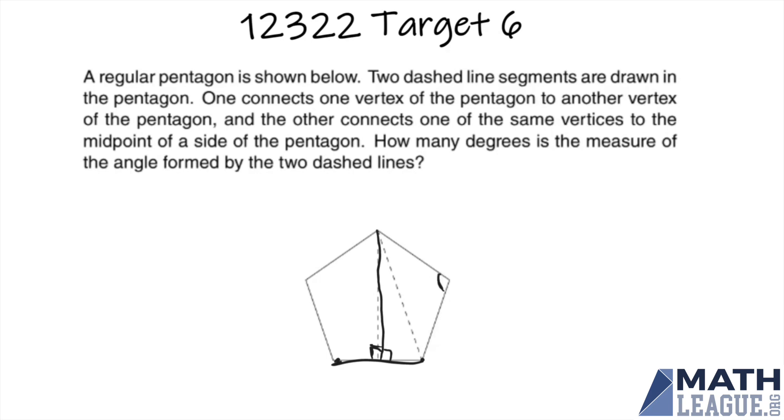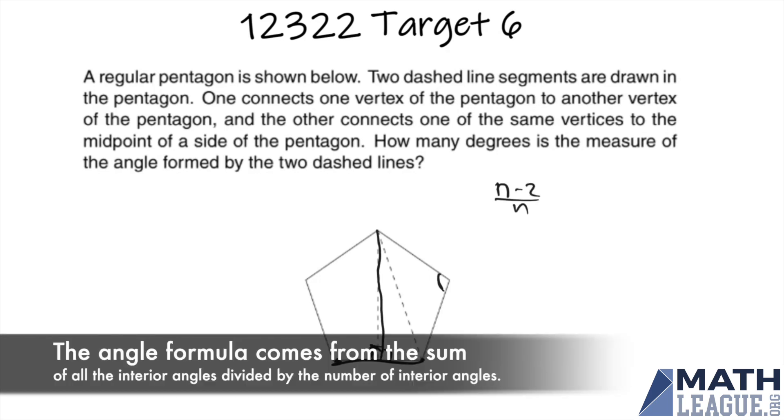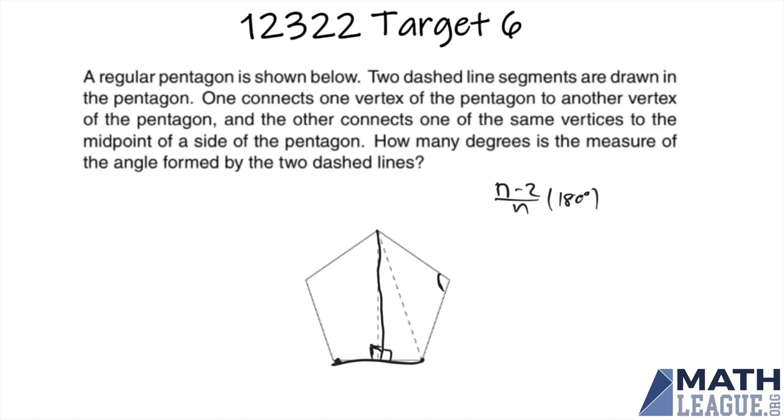The next thing we can do is find this interior angle. To do that, we know the classic formula: if there are n sides of a regular n-gon, then (n-2)/n times 180 degrees is the measure of one of the interior angles. In this case, we have 5 sides, so we do (5-2)/5 times 180 degrees, which is 3/5 times 180 degrees. 180 divided by 5 is 36, so we have 3 times 36 degrees or 108 degrees. That means this angle here has measure 108 degrees.